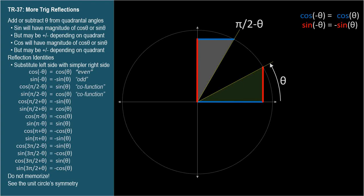I probably don't need to draw the triangle, but I think it makes the symmetry more clear. We want to express these lengths in terms of cosine theta and sine theta. Let's start with the cosine of pi over 2 minus theta, which is the short distance in the positive direction.